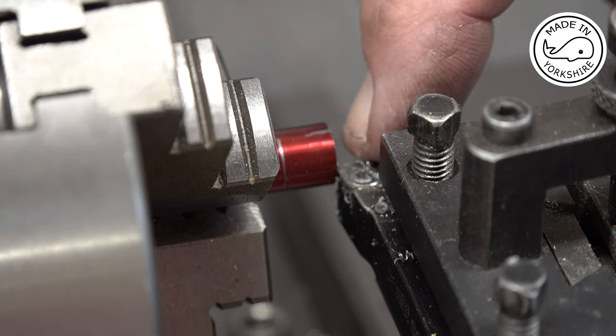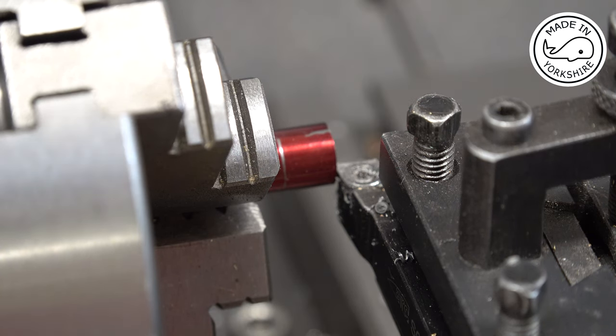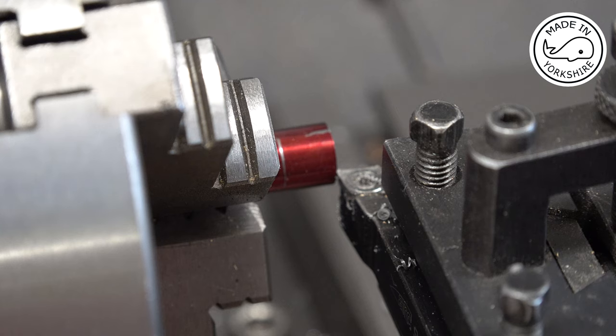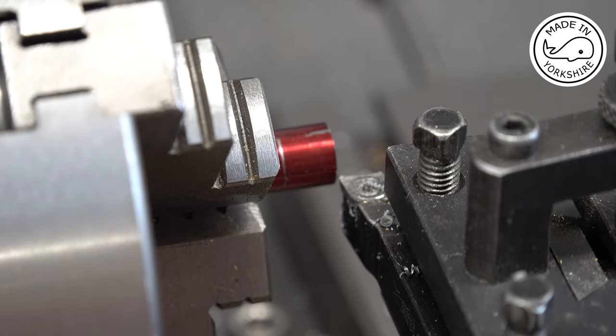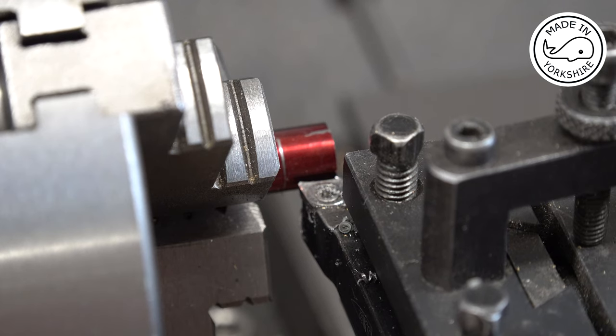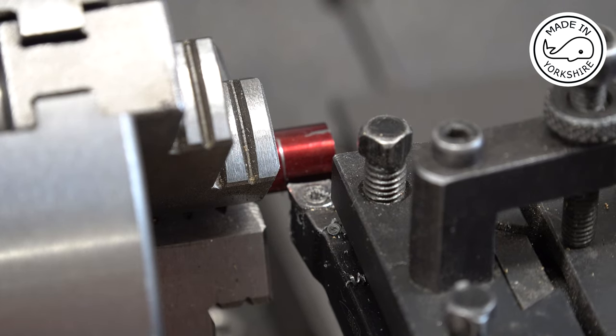I've got the tool on the edge here and now if I move the carriage back to the left 0.313 and set the stop, that gives me exactly the position I need to machine up to.